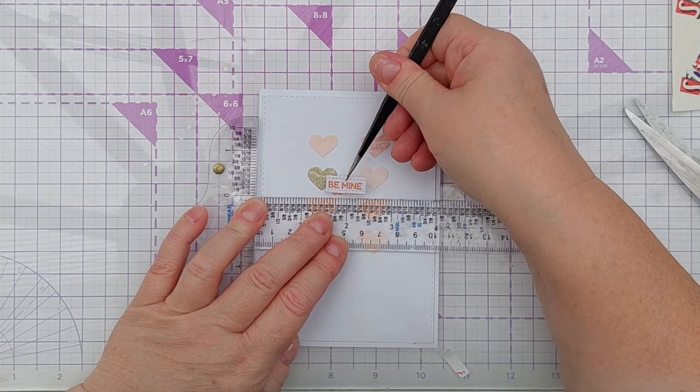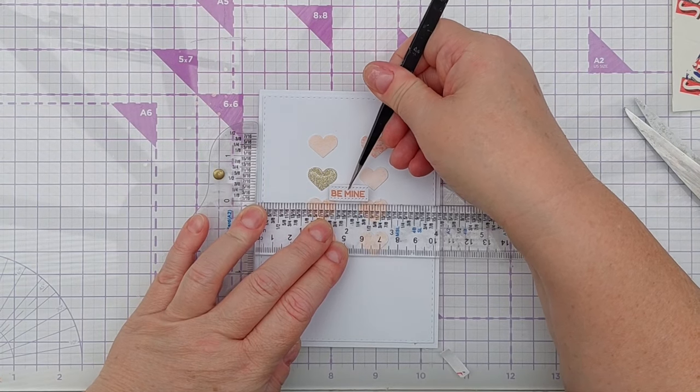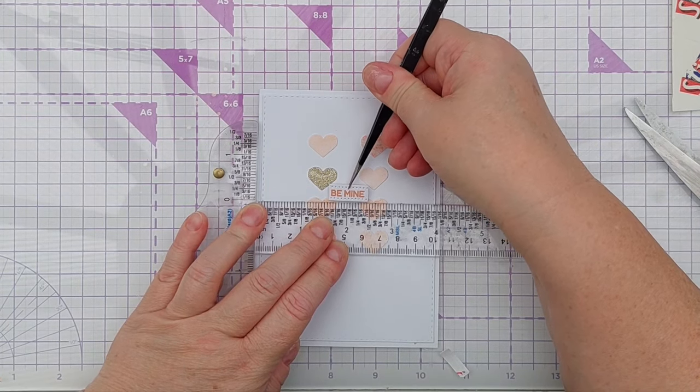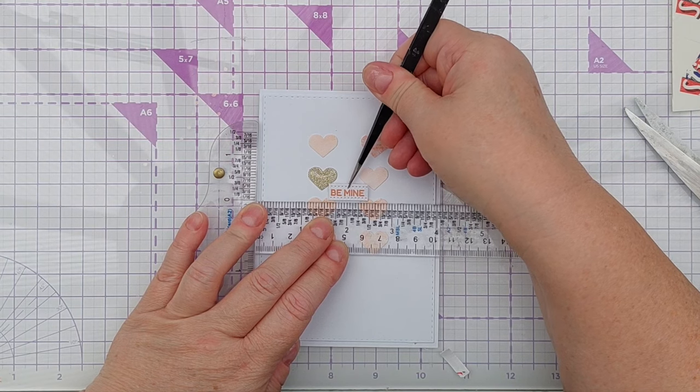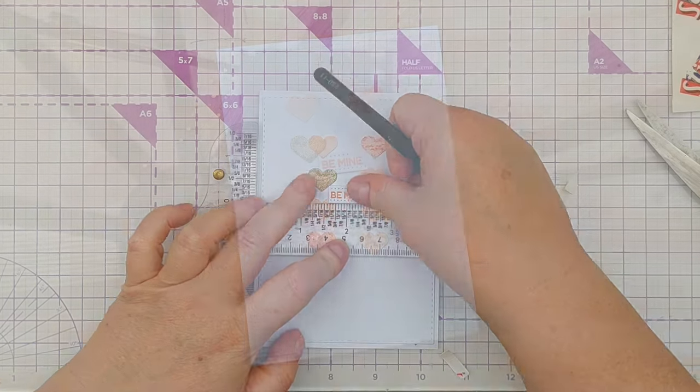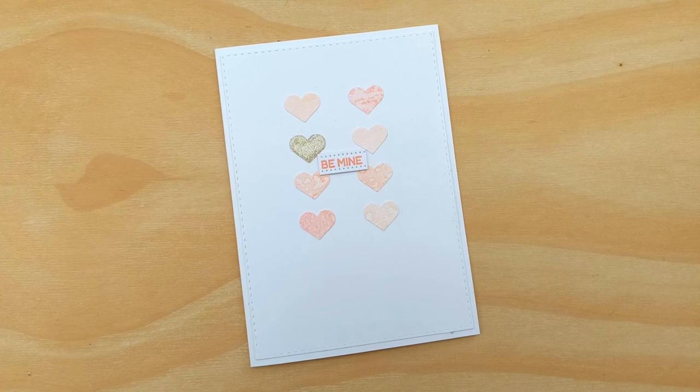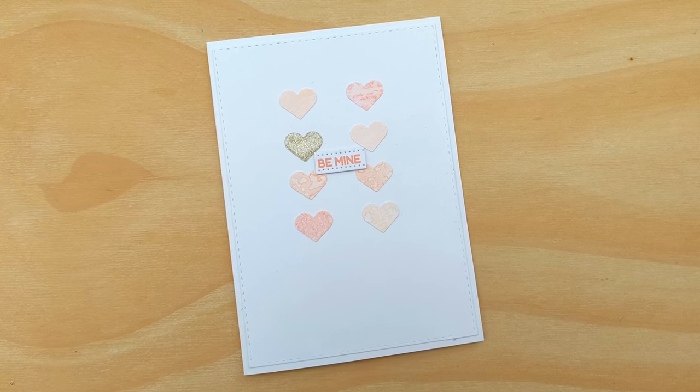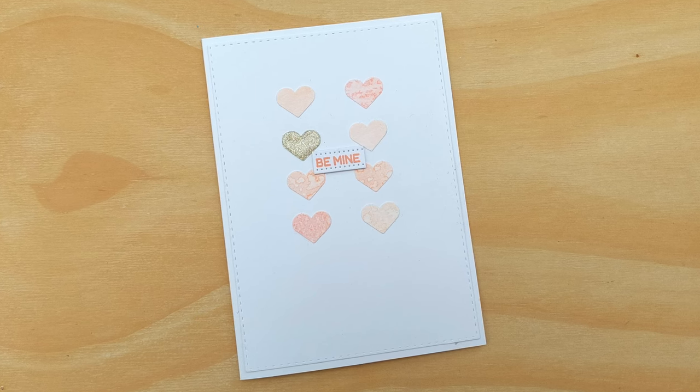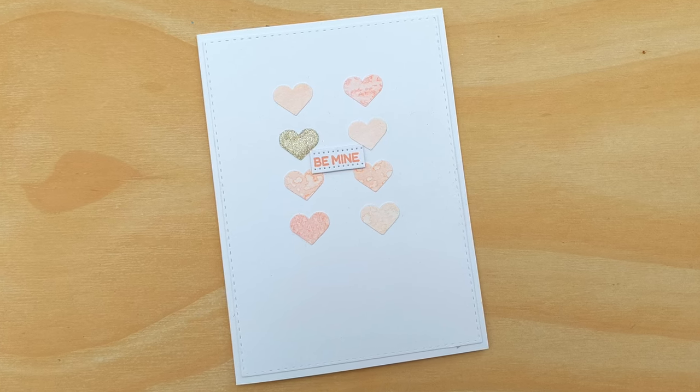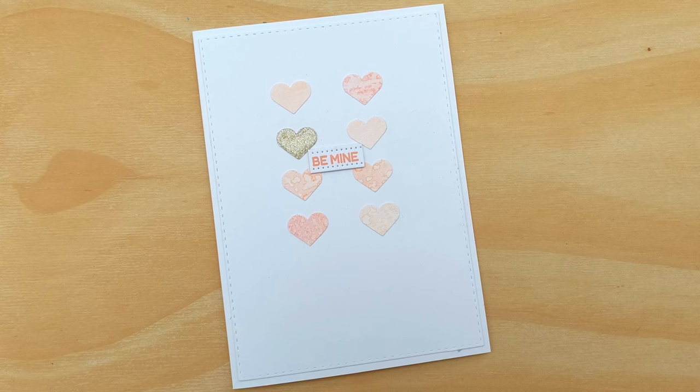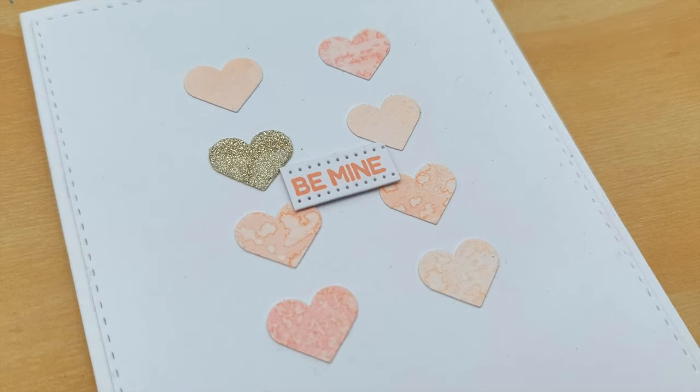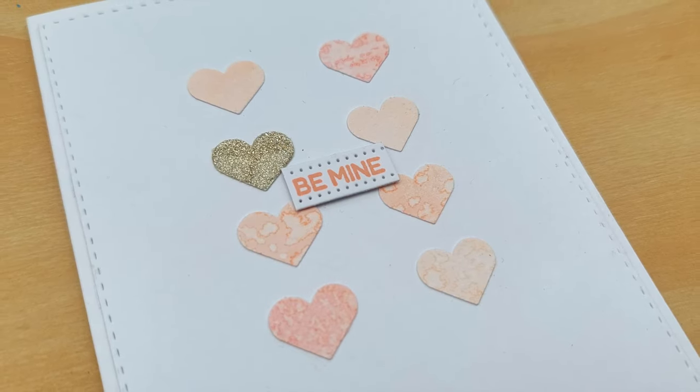To finish off card number one I added a sentiment. Initially I used clay mask Catherine Pooler ink to stamp be mine straight on the card but it ended up a bit too wonky for my liking so I then stamped it on a piece of white card, cut it out with a stitched rectangle die and then added it over the wonky stamping with a bit of craft foam for dimension and that looks so much better.